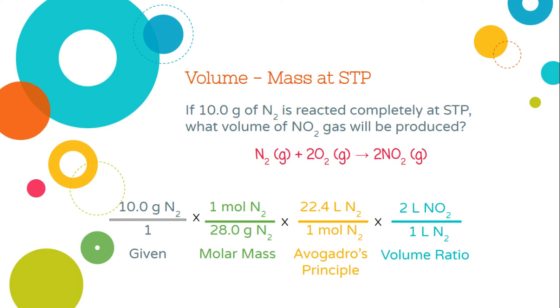I'm going to take all of my numbers on the top, multiply those by each other. I take all of my numbers on the bottom, multiply those by each other. I'm going to take that product from my top numbers, divide it by the product of my bottom numbers. This will give me my answer, my final answer, that volume that I wanted, those liters of nitrogen dioxide.